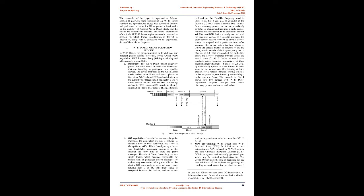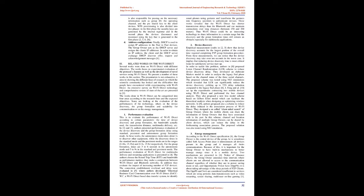The specification is based on the 2.4 GHz frequency used in 802.11 B/G/N, but can also be extended to 5.0 GHz used in 802.11 A/N/AC. In the scanning process, the device periodically switches its channel and transmits a probe request message in each channel. If the channel of another WLAN-based D2D device is timely matched with the scanning device, the probe request can be received by that device, which can respond with a probe response. After scanning, the device enters the find phase, in which the default channel is listened to and mainly used social channels of 2.4 GHz are searched. In the find phase, the device alternates between listen and search states.